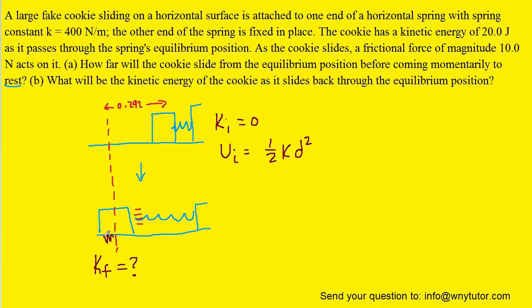Also because of friction, once again, there will be thermal energy generated between the cookie and the surface, so we're going to have the thermal energy as well. Once again, we're going to set the two energies equal to each other. We have the initial spring potential energy, and we're going to set that equal to the final kinetic energy plus that thermal energy.